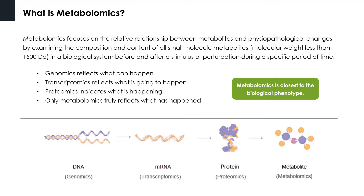Metabolomics is an important component of systems biology. Within the framework of genome, transcriptome, proteome, and metabolome, metabolomics is at the utmost downstream. More specifically, genomics reflects what can happen, transcriptomics reflects what is going to happen, proteomics indicates what is happening, but only metabolomics truly reflects what had happened, as metabolomics is broadly acknowledged as the omics discipline closest to biological phenotypes.